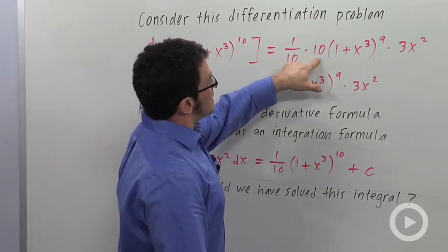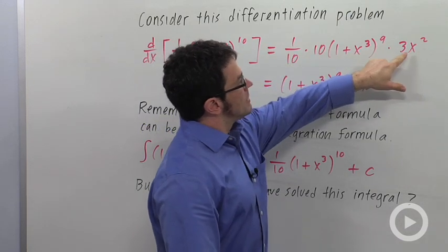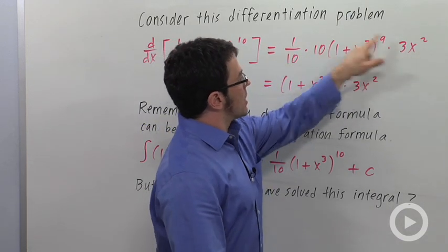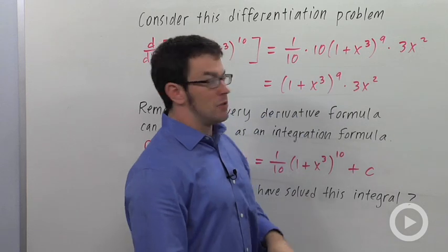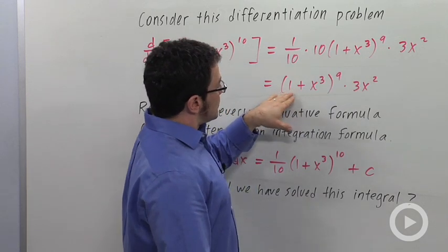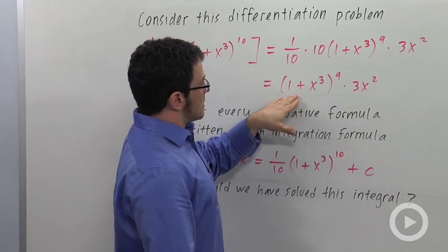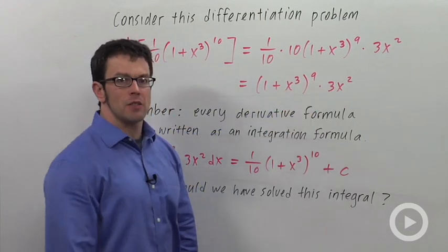1 tenth times 10, 1 plus x cubed to the ninth, times 3x squared. The 3x squared comes from the derivative of the 1 plus x cubed. So this simplifies, the 1 tenth and the tenth cancels to 1 plus x cubed to the ninth times 3x squared.